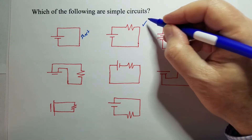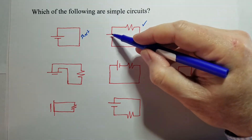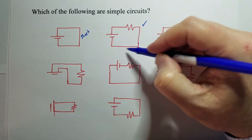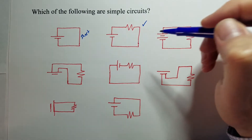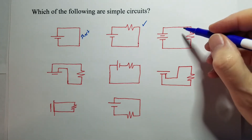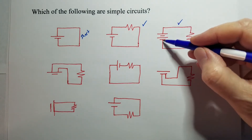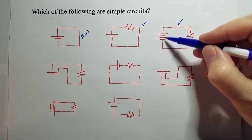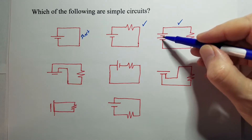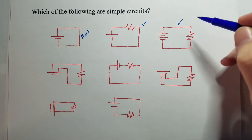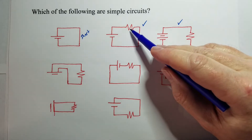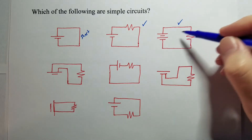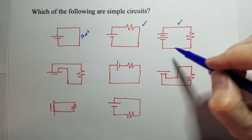This one is a good simple circuit. We've got our battery, one resistor, and one complete loop from one side of the battery to the other — that's a good simple circuit. This one likewise is a good simple circuit. It doesn't matter how many batteries you have; it's just that you only have one resistor. You can draw it with two battery cells and one resistor. It doesn't really matter where you put the resistor, whether it's on top or on the side — either way is correct, as long as you have one loop and just one resistor.